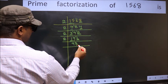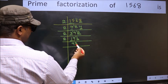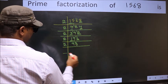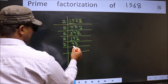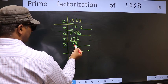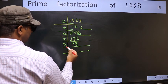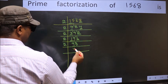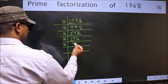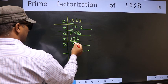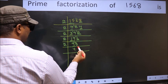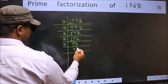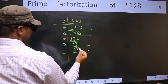Now the last digit is 8, which is even, so take 2. First number is 9. A number close to 9 in the 2 table is 2×4=8. 9-8=1, carry forward 1, giving 18. When do we get 18 in the 2 table? 2×9=18.